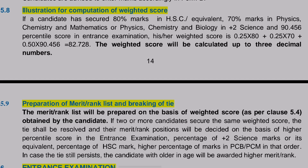Let's take an example. If you scored 80% marks in HSC, 70% marks in Physics, Chemistry, and Biology in class 12, and 90.456 percentile in the entrance exam, then your final weightage will be 82.728. The calculation is: (25/100 × 70) + (25/100 × 80) + (50/100 × 90.456) = 17.5 + 20 + 45.228 = 82.728. I hope you understood.